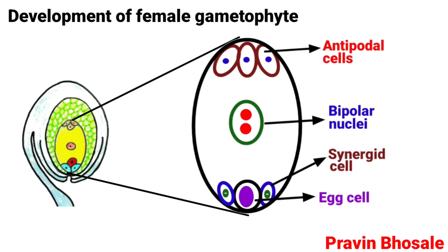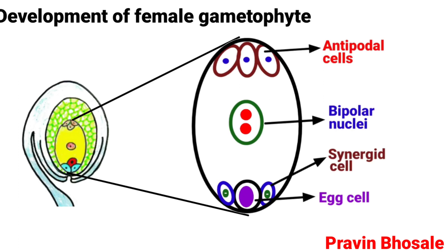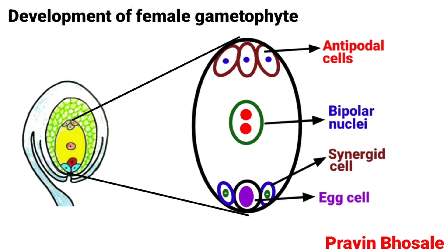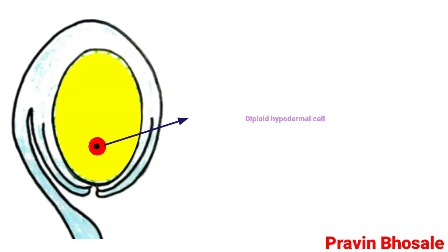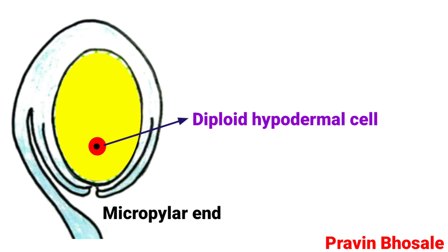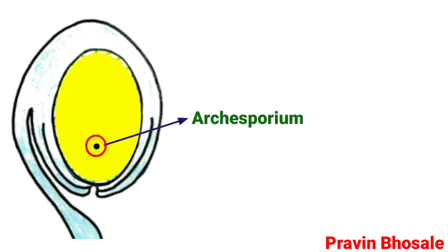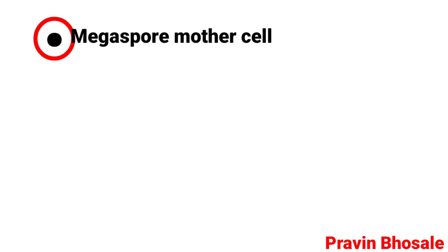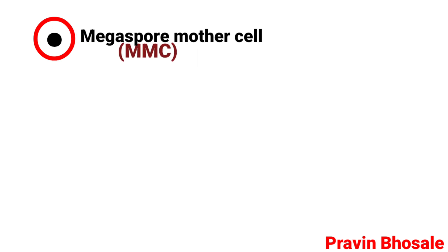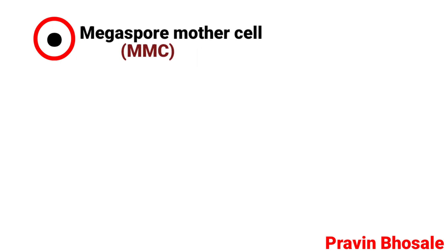Today we start with a new topic: development of female gametophyte, also called as embryo sac. A hypodermal cell at the micropylar end of the nucleus gets differentiated to form archesporium. Archesporium functions as the megaspore mother cell (MMC).